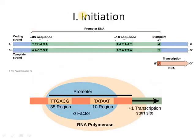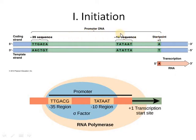Transcription ka jo process hai, iska first step jo hai, that is initiation. Initiation mein kya hota hai — jis point se gene ki transcription start honi hai, DNA se RNA banna shuru hona hai, usse pehle ke sequences upstream sequences kehlaate hain. Vo ek specific region of DNA banaate hain, which is called promoter DNA.